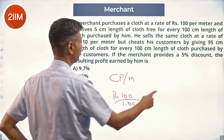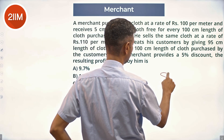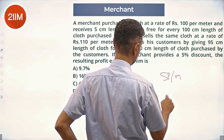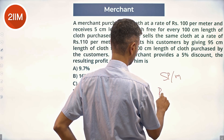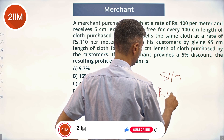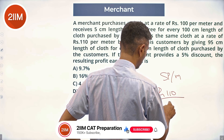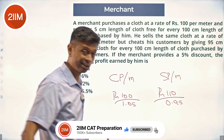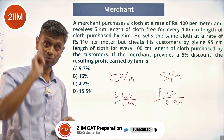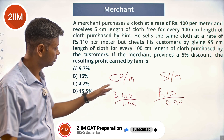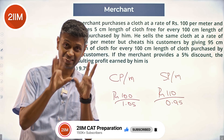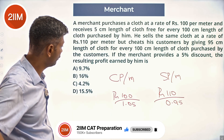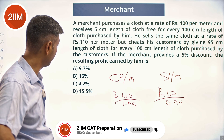Selling price per meter: rupees hundred and ten into point nine five. He sells at ten rupees more, but price-wise he cheats — he gives only point nine five.